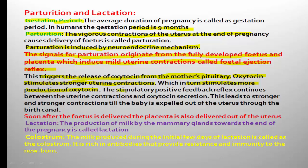This stimulatory positive feedback reflex continues between uterine contractions and oxytocin secretion. In the human body, the homeostasis — the constant maintenance of the internal environment — is normally regulated. Most hormone regulation works by negative feedback.